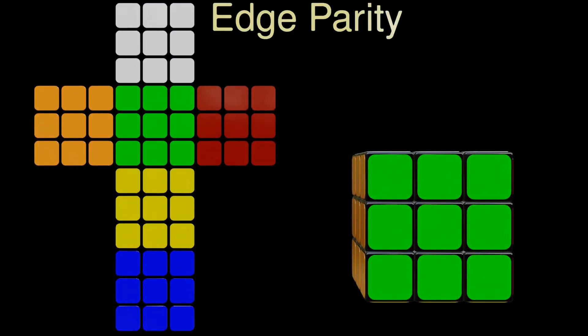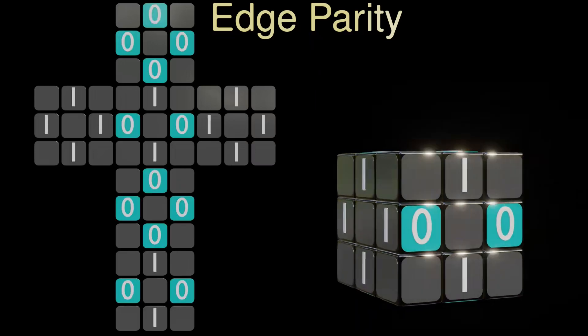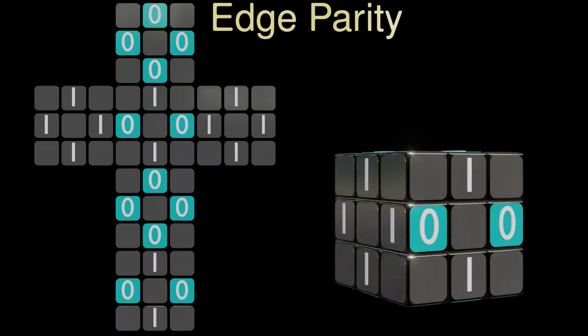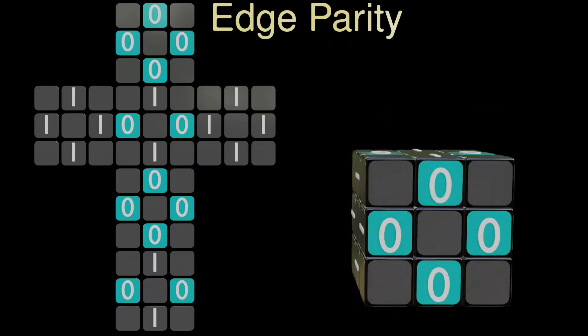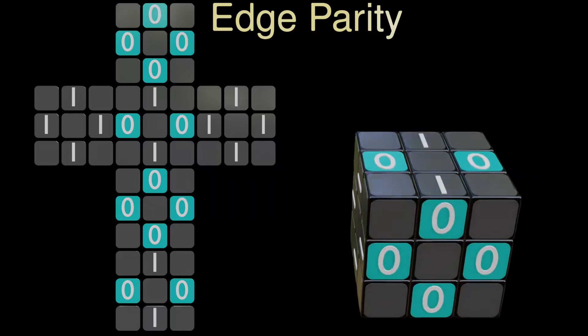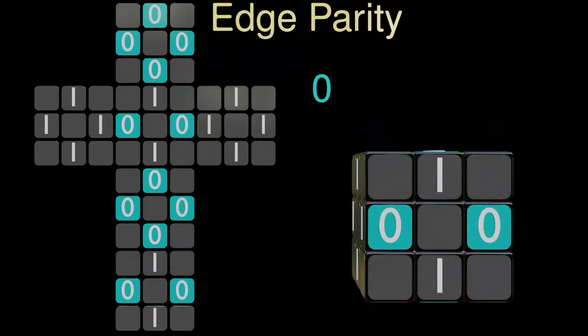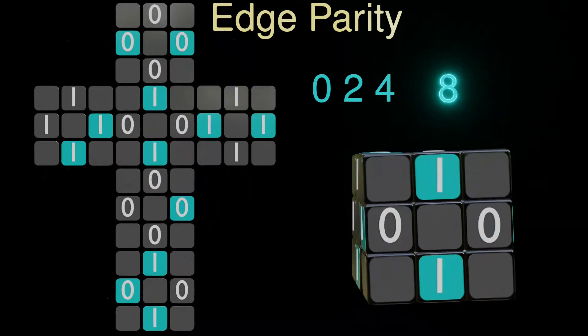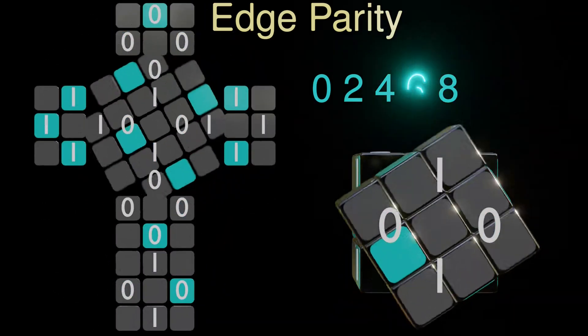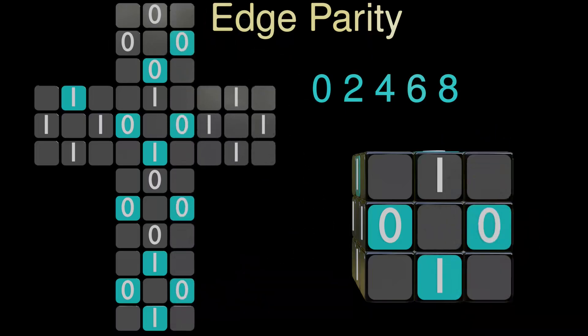In the solved state, we can assign orientation numbers, either 0 or 1, to each face of the edge pieces. These numbers stay fixed relative to the center pieces of the cube, which means that they do not rotate when we twist the cube. Additionally, each face that is initially assigned with a 0 orientation number is painted in light blue. The color moves with the face as the cube is twisted. Interestingly, no matter how we twist a cube, the total sum of orientation numbers in front of the colored faces always remains even. You can check this for every possible move.